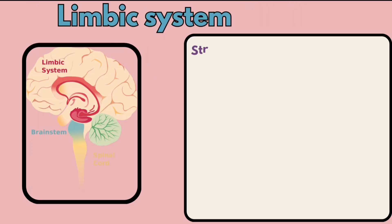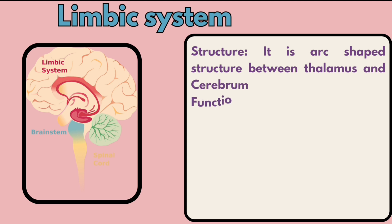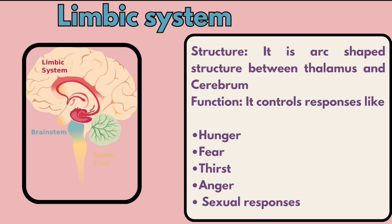The next part is the limbic system. It is an arc-shaped structure located between the thalamus and cerebrum. Its functions are to control responses like hunger, fear, thirst, anger, and sexual responses.